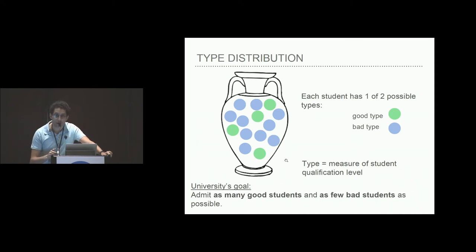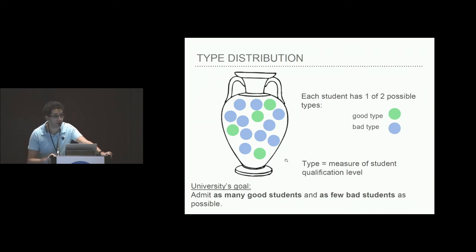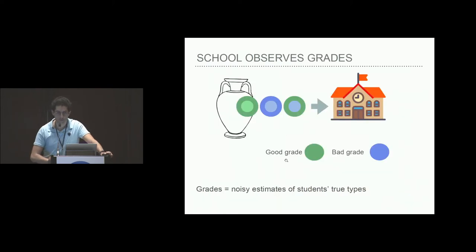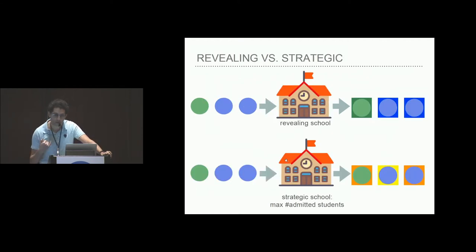Here is the model we look at today, staying in the college admission setting. Students have one of two possible types: a good student or a bad student, reflecting their qualification level. The university wants to admit as many good students as possible and reject bad students. The high school sees information about students in the form of grades, which are noisy, imperfect estimates of the students' true types or qualification level. The school then signals to the university.